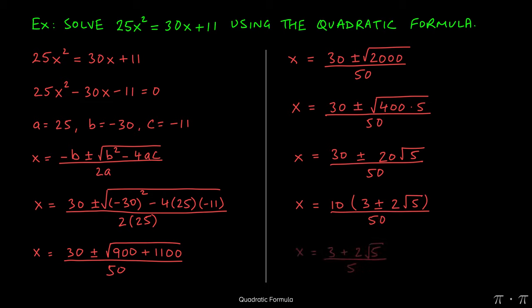3 plus 2 radical 5 over 5, and the second one would be 3 minus 2 radical 5 over 5. Those are the 2 solutions to our original equation, 25x squared equals 30x plus 11.